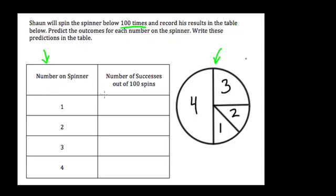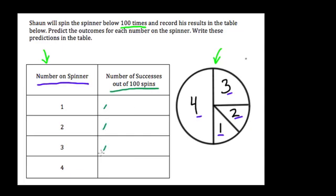Let's take a look at this table. In the left-hand column, that's just the number on the spinner — one, two, three, or four — and you can see those areas marked on the circle. On the right-hand column, it says the number of successes out of a hundred spins. They might use different words like occurrences or events, but a success, an outcome, and an occurrence all mean the same thing: how many times did you land on each number.